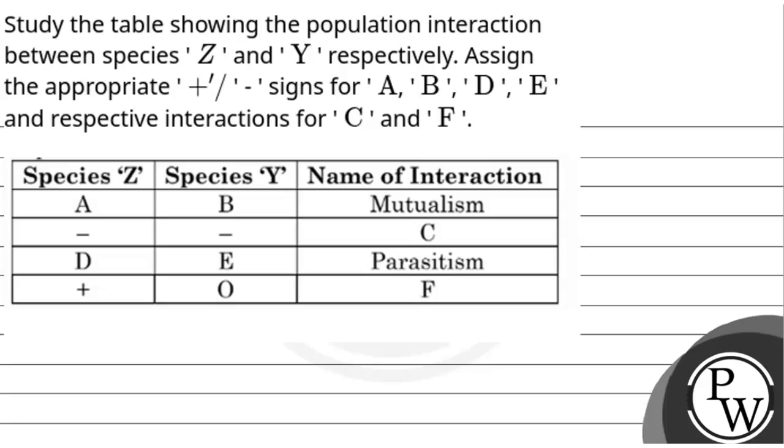Hello, let's read the question. Here the question is we need to study the table showing the population interaction between species Z and Y respectively. Assign the appropriate plus/minus signs for A, B, D, E and respective interactions for C and F.